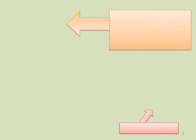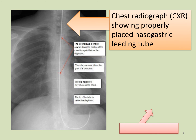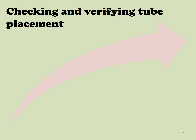When an enteral access device is inserted, placement must be confirmed by radiography. This is essential to ensure the tube is not misplaced. During insertion of a nasogastric or nasoenteric tube, the device may pass into the trachea or may fail to reach the stomach or duodenum. Tissue trauma and aspiration are complications associated with nasogastric tubes.